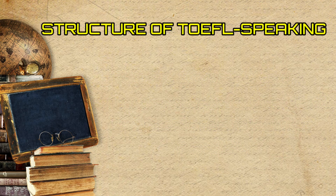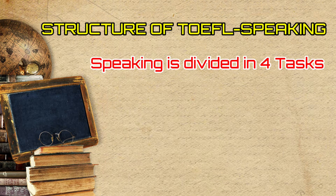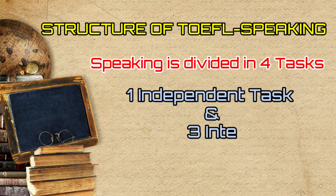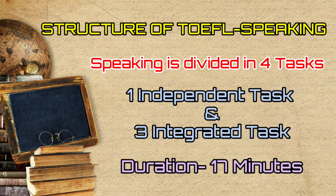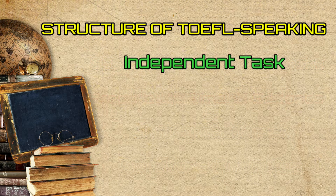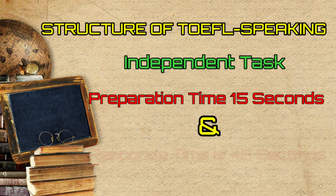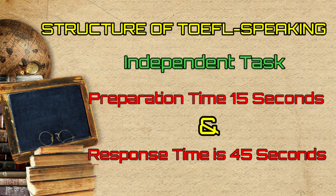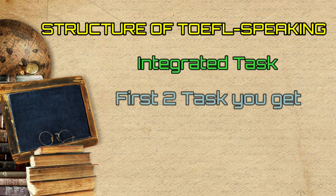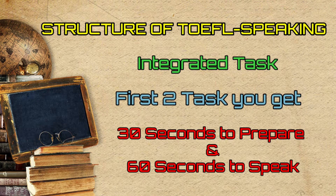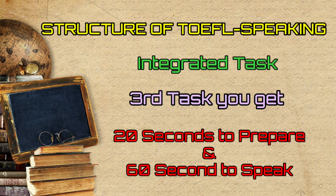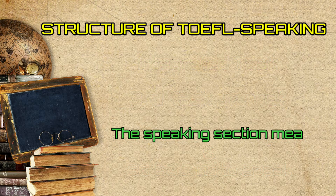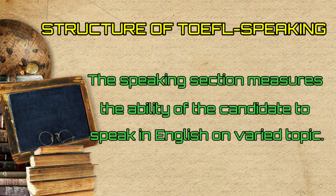TOEFL Speaking: In speaking, four tasks need to be attempted, which includes one independent task and three integrated tasks. The total time allotted for this section is 17 minutes. For the independent task, 15 seconds of preparation time and 45 seconds for response is given. Time allotted for the first two integrated tasks is 30 seconds to prepare and 60 seconds to speak. For the third integrated task, 20 seconds to prepare and 60 seconds speaking time is allowed. The speaking section measures the ability of the candidate to speak in English on varied topics.